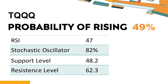When the stochastic oscillator rises above the 80 level, it is usually considered overbought, indicating that the stock may be due for a price pullback. An overbought condition occurs when a stock's price rises too fast and too high in a short period of time and can be a sign that buying pressure has exhausted.